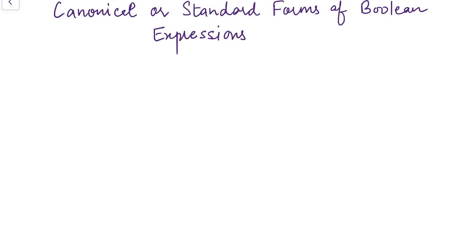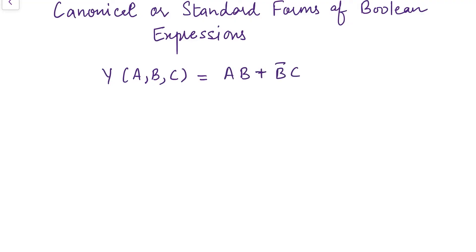Hello everyone, welcome back to the channel. In the previous video, Boolean expression minimization was discussed. There we have seen that Boolean expressions are written in two different ways. The first way is that we can write any Boolean expression y, which is a function of three variables a, b and c, written as ab plus b-complement c. If the expression is written like this, it is known as sum of products.